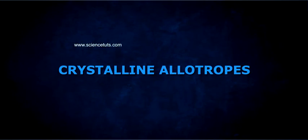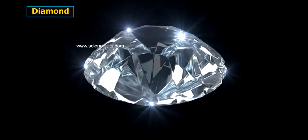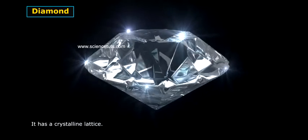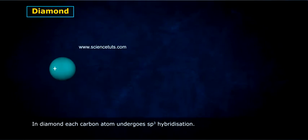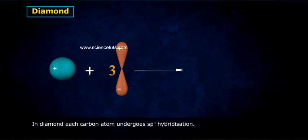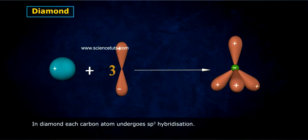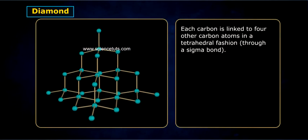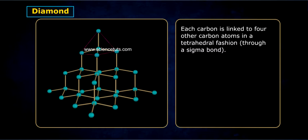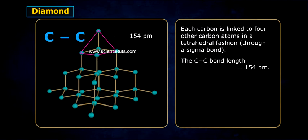Let us discuss the Crystalline Allotropes. Diamond has a crystalline lattice. In diamond, each carbon atom undergoes sp3 hybridization. Each carbon is linked to four other carbon atoms in a tetrahedral fashion through a sigma bond. The carbon-carbon bond length is equal to 154 pm.